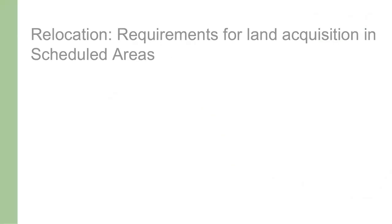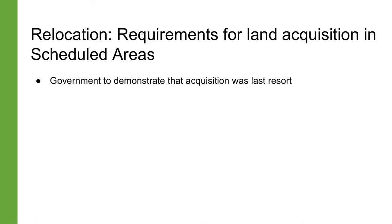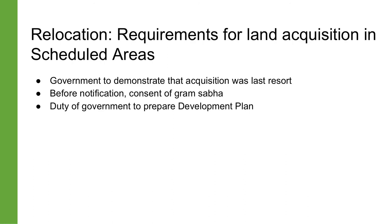Let us now look at some laws that apply to resettlement in specific scenarios — first, resettlement from scheduled areas, and then resettlement for the purposes of wildlife conservation. Some of these provisions may overlap and there can be situations where both sets of laws apply. In scheduled areas, the government must be able to demonstrate that the acquisition of that land was the last resort. Further, before the notification of acquisition, the government must secure the consent of the concerned Gram Sabha, Panchayats, or the autonomous district councils at the appropriate level.